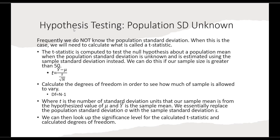Now let's look at the more common type of hypothesis testing — when we do not know the population standard deviation. When this is the case, we are not going to calculate a z-statistic; instead we calculate a t-statistic. The t-statistic is computed to test the null hypothesis about a population mean when the population standard deviation is unknown and is estimated using the sample standard deviation instead. We can do this if our sample size is greater than 50. The t-statistic equals the sample mean minus the specified value, divided by the sample standard deviation divided by the square root of n. We also need to calculate degrees of freedom, which equals n minus 1.